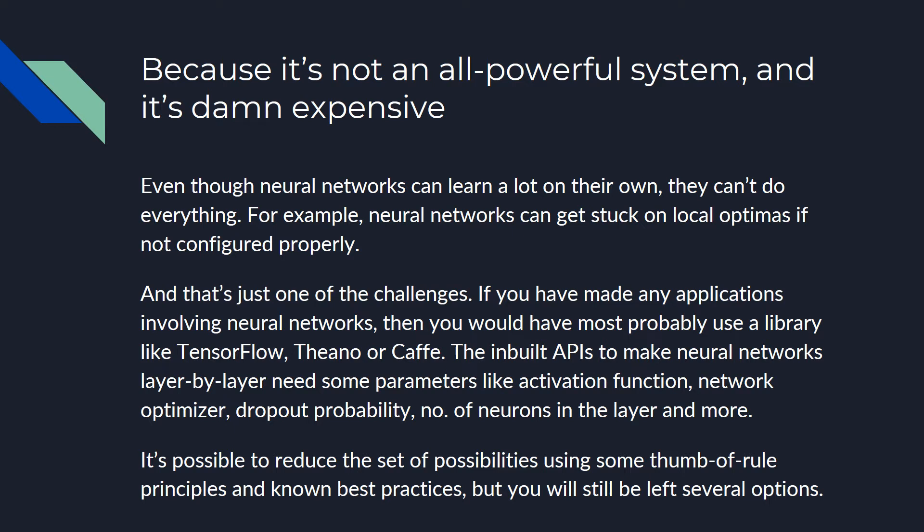We use a lot of libraries like TensorFlow, Theano, and Caffe to build neural networks. All of these libraries have a lot of built-in APIs which accept many parameters like activation function, network optimizer, dropout probability, the number of neurons in a layer, the number of layers, and a lot more factors. It's possible to reduce these factors into a set of possibilities using best practices, but you will still be left with a lot of options — so how do you go about making a network with the best parameters?